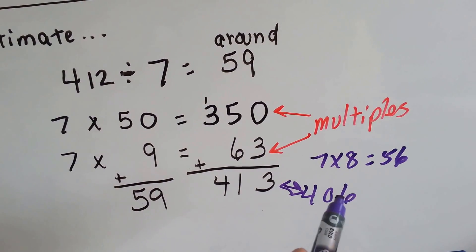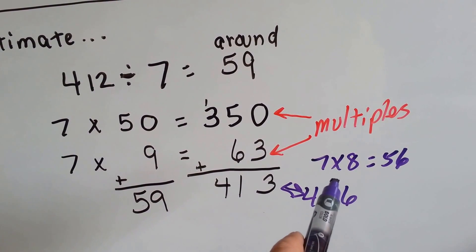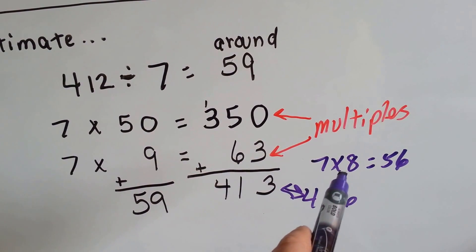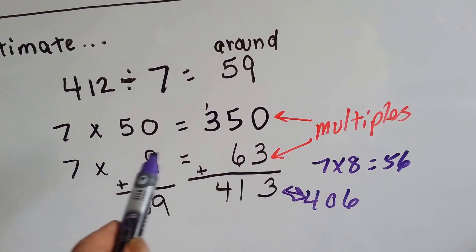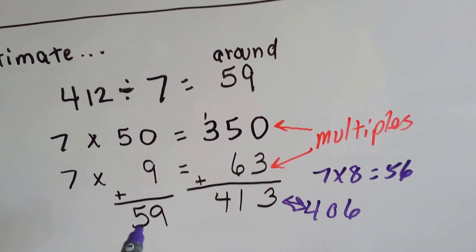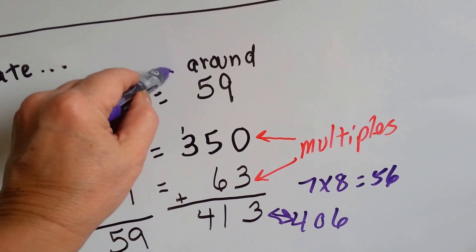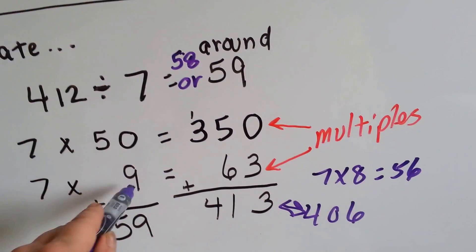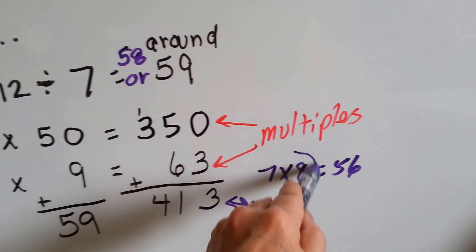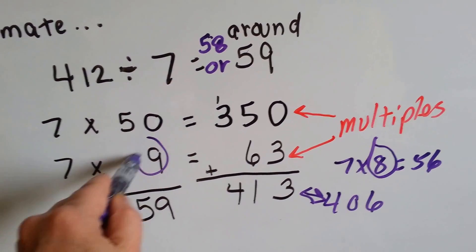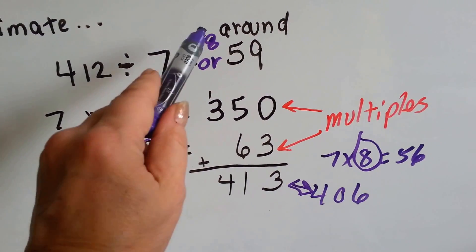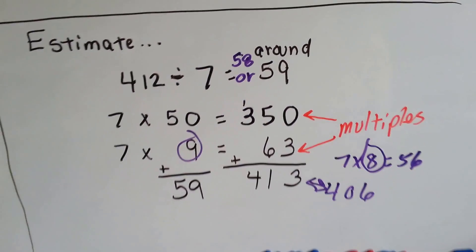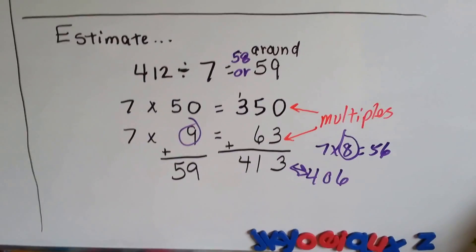So, you could say that it's between 8 and 9 here, which makes it between 58 or 59, because we have to add the 50 to it. So, it's either going to be 7 times 8 or 7 times 9, which is going to make this 58 or 59. So, that's our estimate. It's around 58 or 59.